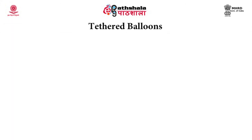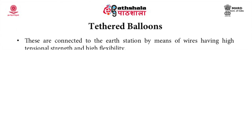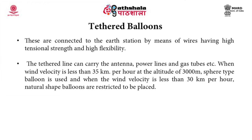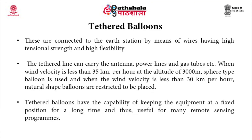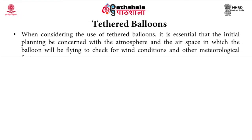Tethered balloons are connected to the earth station by means of wires having high tensional strength and high flexibility. The tethered line can carry the antenna, power lines, and gas tubes. When wind velocity is less than 35 km/h at an altitude of 3000 meters, a sphere-type balloon is used; when wind velocity is less than 30 km/h, natural-shape balloons are restricted. Tethered balloons have the capability of keeping equipment at a fixed position for a long time, making them useful for many remote sensing programs. Initial planning must consider atmospheric and airspace conditions, wind, and other meteorological factors.